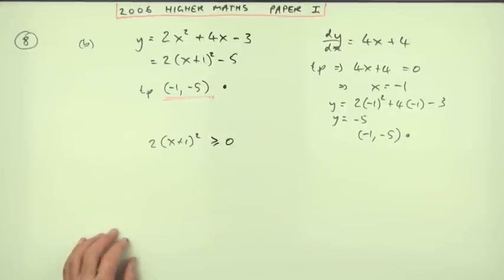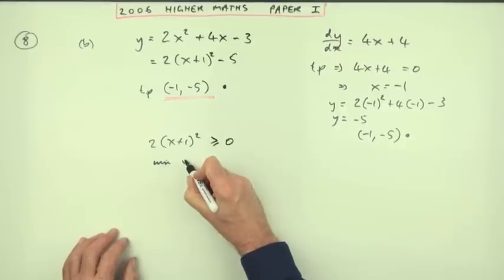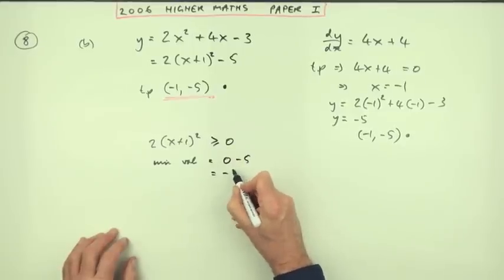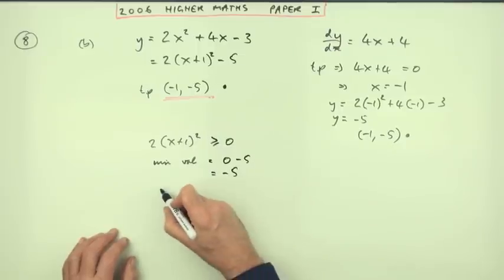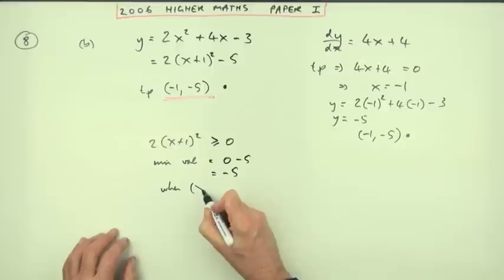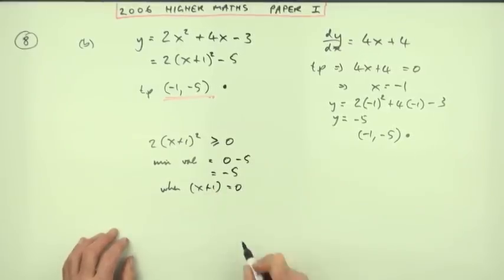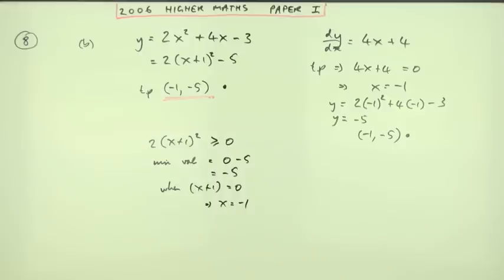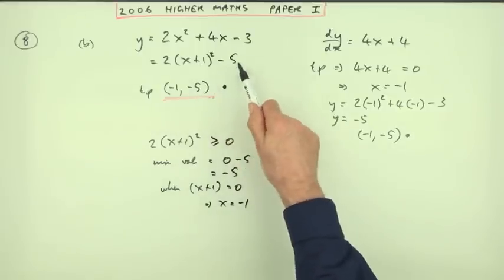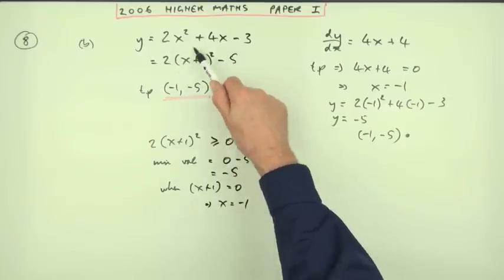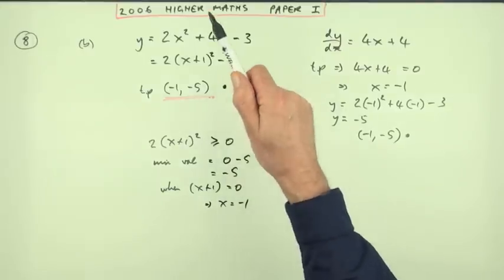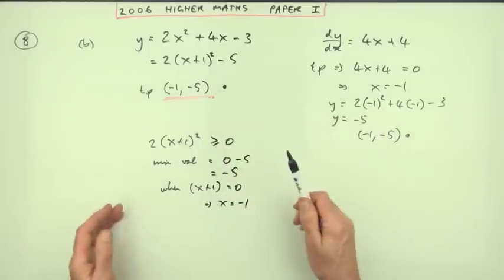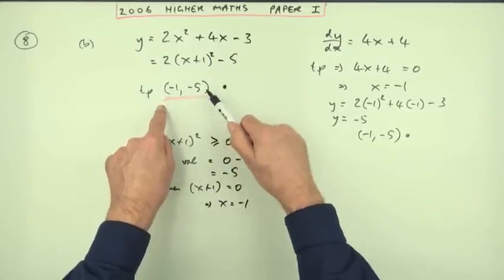That expression is always greater than or equal to zero, which means the minimum value is zero plus negative five, which is negative five. And that minimum occurs when the bracket equals zero, i.e., when x equals negative one. That would be the algebraic reason — the lowest value this can have is negative five because the lowest value of a square is zero, and it achieves that when x plus one equals zero. But you didn't need any of that — it was just one mark, done.